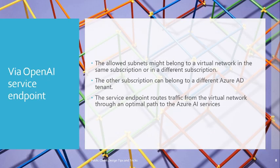If you are thinking about service endpoints — when you enable service endpoints, it routes the traffic from the virtual network through an optimal path to Azure AI services. If you are using the OpenAI service endpoint, the path will be much more optimal. However, the challenge is that the request will be going through the Microsoft Backbone Network, meaning from private to public the route will never be fully private — it will go via the Microsoft Backbone Network.